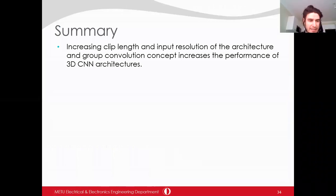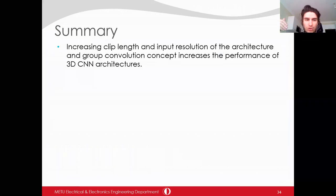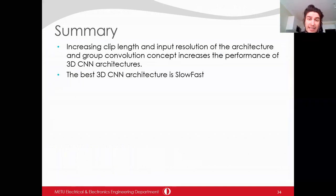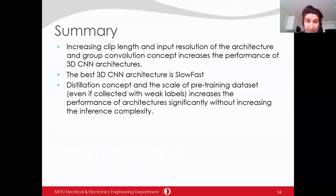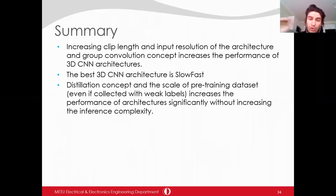As a summary: increasing clip length and input resolution, along with the group convolution concept, increases the performance of 3D CNN architectures. The base 3D CNN architecture is SlowFast. Distillation concept and the scale of pre-training data, even if collected with weak labels, increases architecture performance significantly without increasing inference complexity.